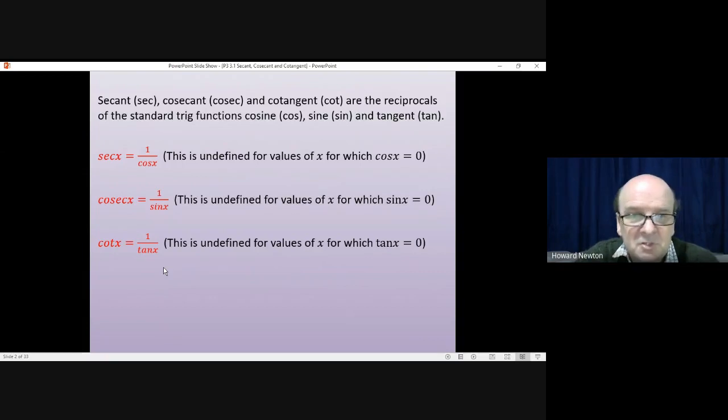Now, notice, it's not intuitive. You would expect that sec would be 1 over sine and you would expect that cosec would be 1 over cos. But it's back to front from what you would expect them to be. It's important to remember that.